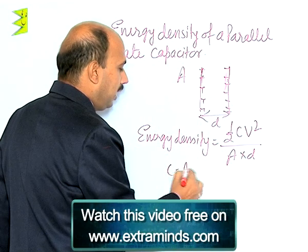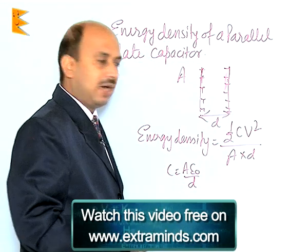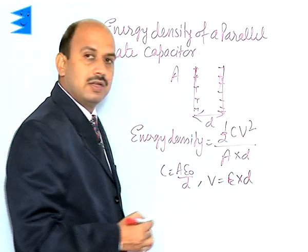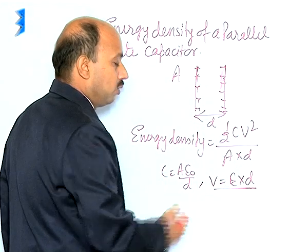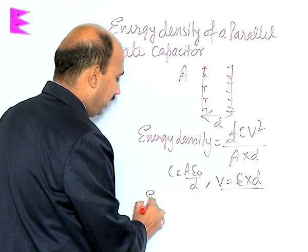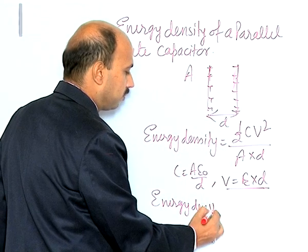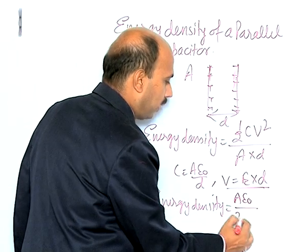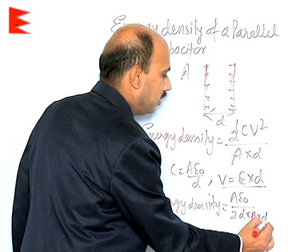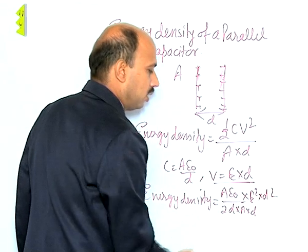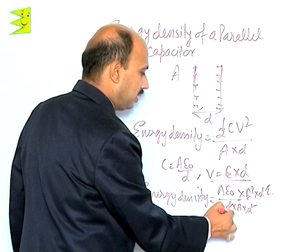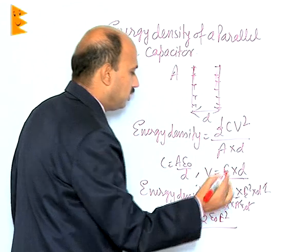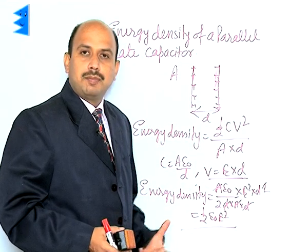We know that C = Aε₀/d for a parallel plate capacitor having vacuum between the plates, and V = E·d, that is electric field into distance. Replacing all these values, energy density becomes (Aε₀/2d) · (E²d²) / (Ad), and everything cancels to give us ½ε₀E². This is the energy density of the parallel plate capacitor.